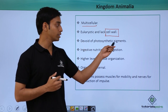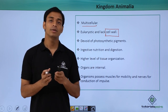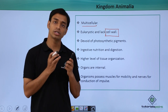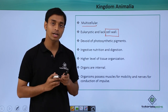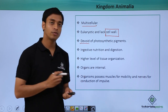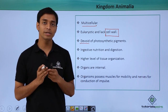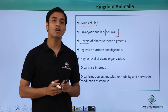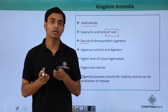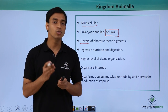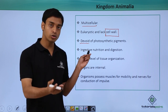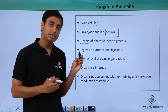Animals are devoid of photosynthetic pigments — another difference from the plant kingdom, which has photosynthetic pigments like chlorophyll. Animals are devoid of these photosynthetic pigments, meaning they cannot make their own food using carbon dioxide, water, and sunlight. They cannot make their own food, so they are dependent on autotrophs for their nutrition.